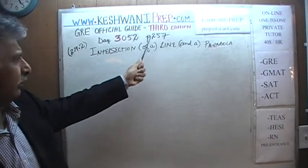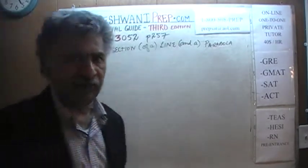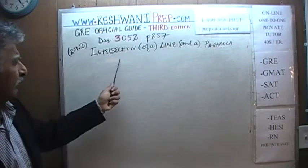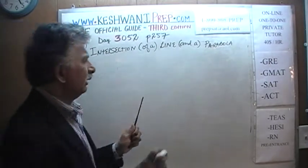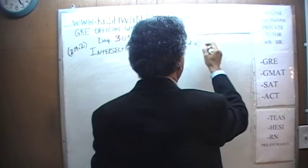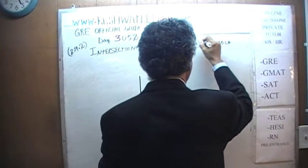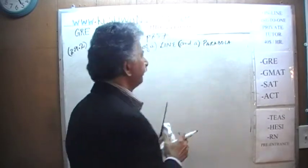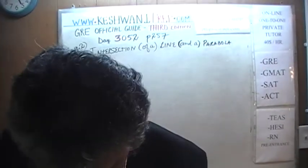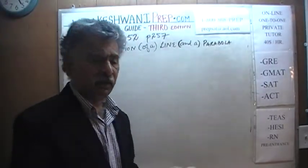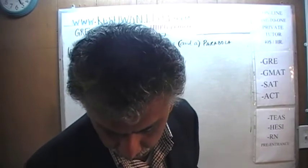We are on page number 257. We are looking at example 2.9.2 which deals with intersection of a line and a parabola. The parabola that is given to us in this example is very straightforward. It is a standard parabola, sitting at the origin, nothing fancy about it. Very straightforward, very innocent parabola. It is about as innocent as you can get.